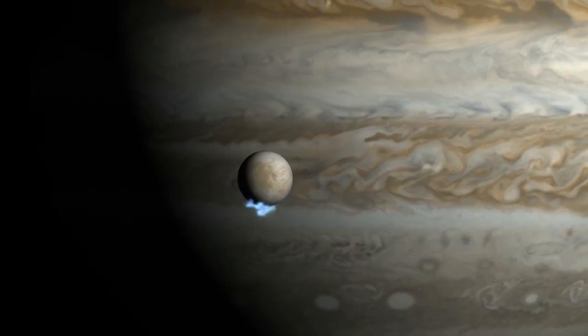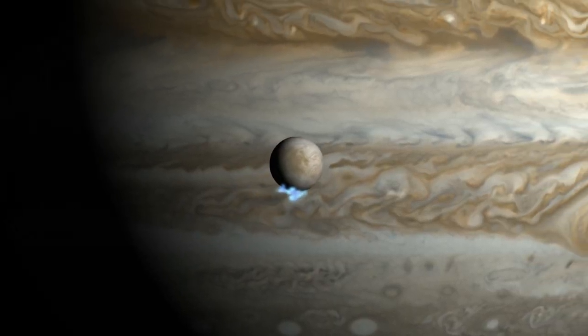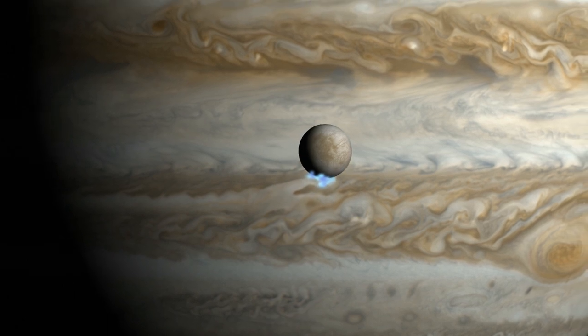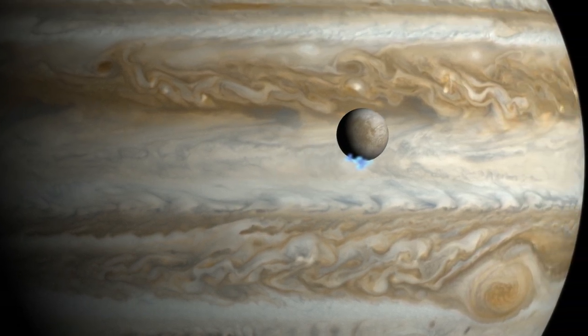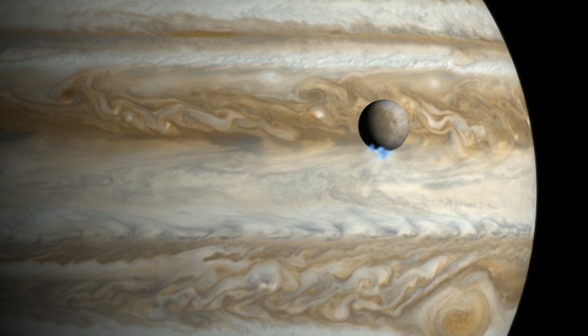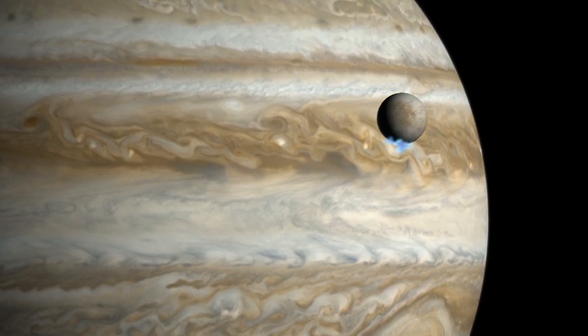In 2013, Hubble provided the first observational evidence of water vapor erupting from the frigid surface of Jupiter's moon Europa near its south pole.